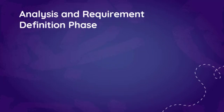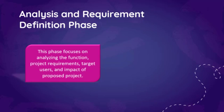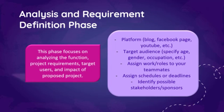Next, we have the Analysis and Requirement Definition phase. This phase focuses on analyzing the function, project requirements, target users, and impact of the proposed project. Here you specify most of the requirements you will be expecting as output in your website. For example, you specify what platform you will use — are you going to use a blog, Facebook page, YouTube, Slideshare, or maybe Prezi — because you can use those platforms as well.